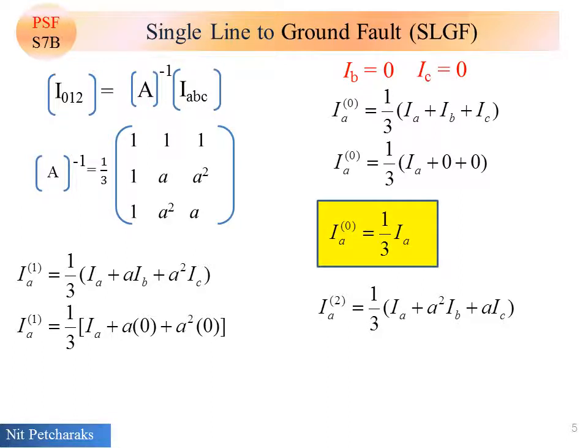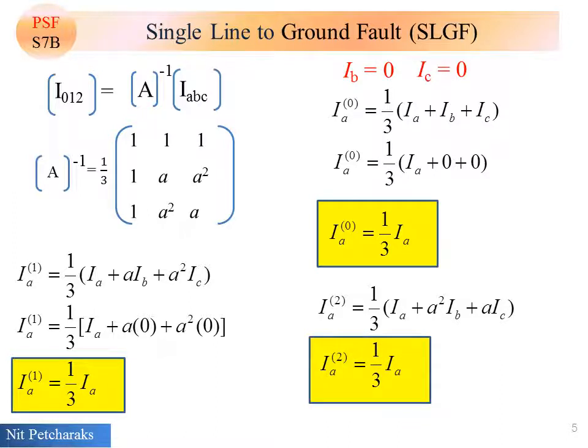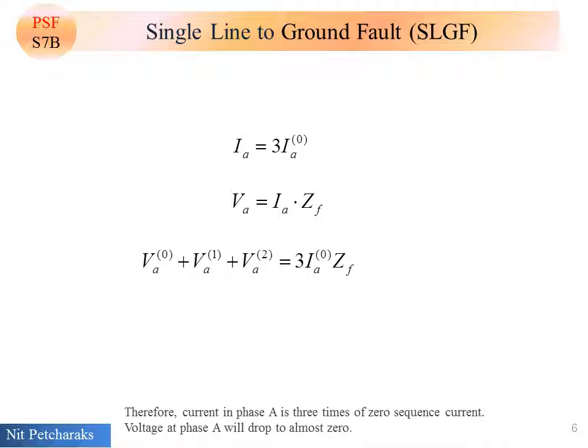We use our knowledge from power system section 5. We can see that the zero, positive, and negative sequence currents have the same value, one-third of the current IA. Therefore current in phase A is three times of zero sequence current.